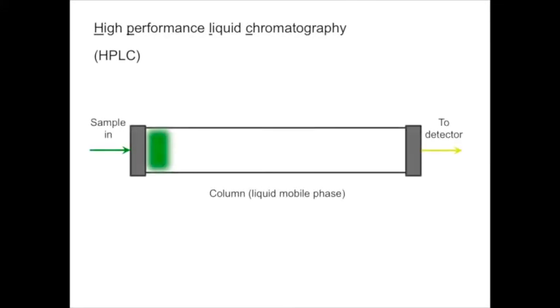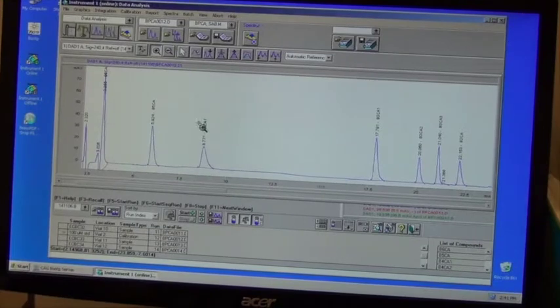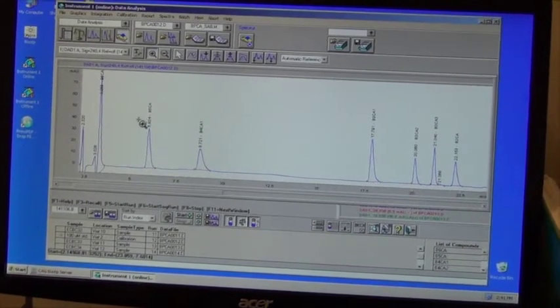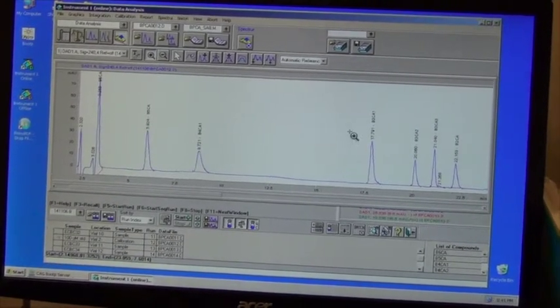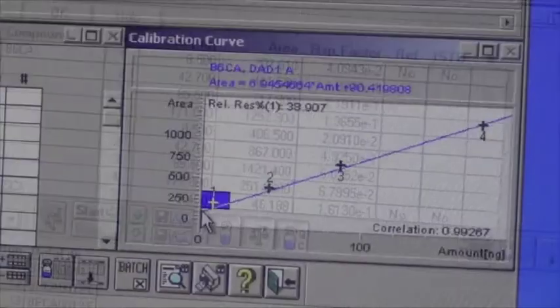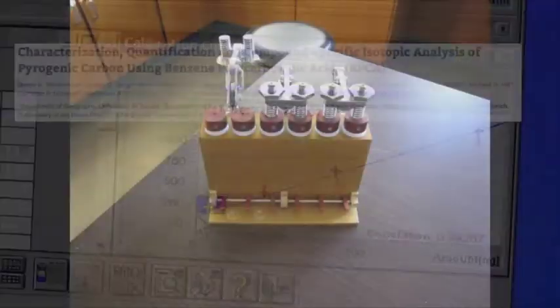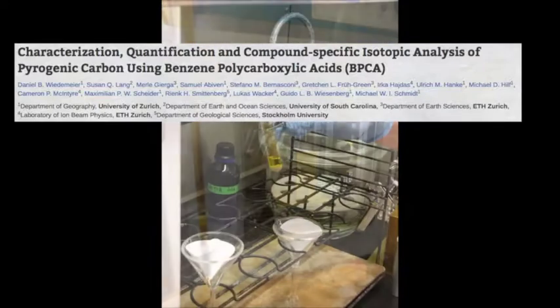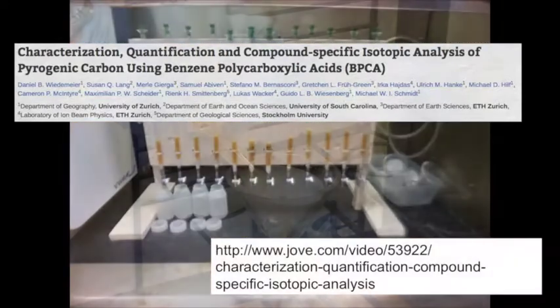HPLC works similarly to the gas chromatograph that we saw in the greenhouse gas lab, but with a liquid mobile phase rather than gas. Each BPCA compound produces a unique peak, which can be identified and quantified. A detailed video of the entire BPCA method can be found in this paper and at the website shown here.